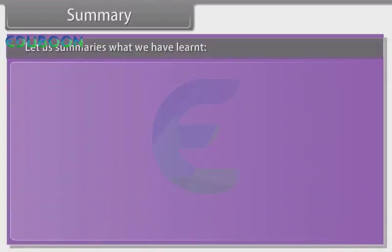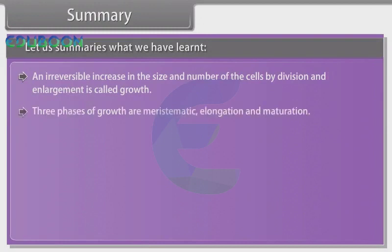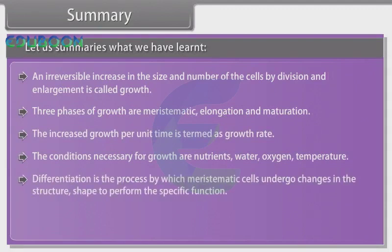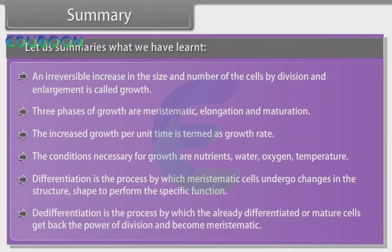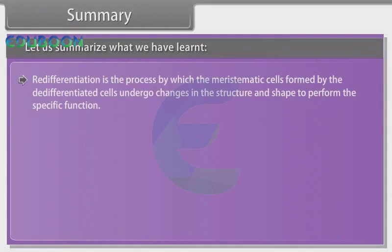Summary: An irreversible increase in the size and number of cells by division and enlargement is called growth. Three phases of growth are meristematic, elongation and maturation. The increased growth per unit time is termed as growth rate. The conditions necessary for growth are nutrients, water, oxygen and temperature. Differentiation is the process by which meristematic cells undergo changes in structure and shape to perform a specific function. De-differentiation is the process by which already differentiated or mature cells get back the power of division and become meristematic. Re-differentiation is the process by which meristematic cells formed by de-differentiated cells undergo changes in structure and shape to perform specific functions.